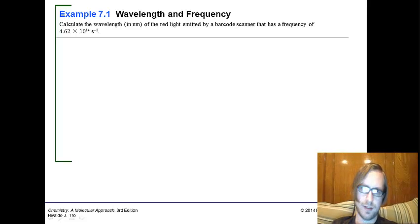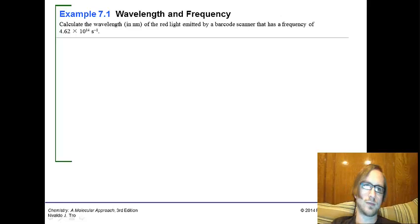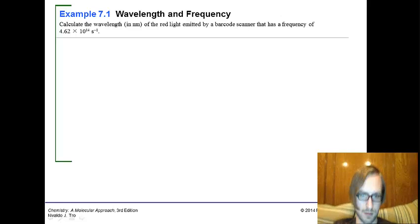All right, so let's look at the sample exercise. We'll talk about that in just a little bit. This is Example 7.1. Calculate the wavelength in nanometers of the red light emitted by a barcode scanner that has a frequency of 4.62 times 10 to the 14th hertz.